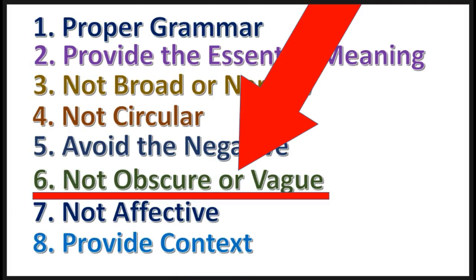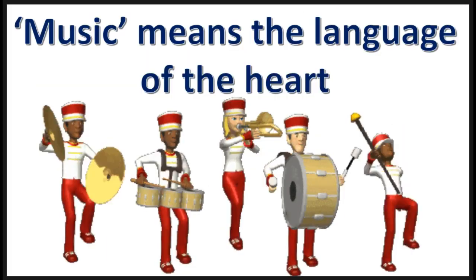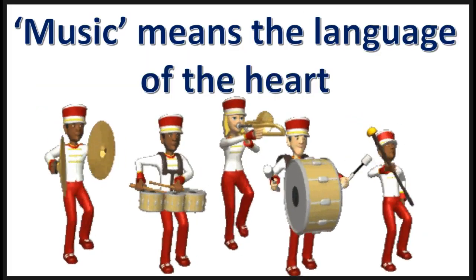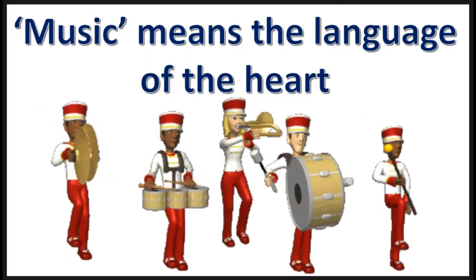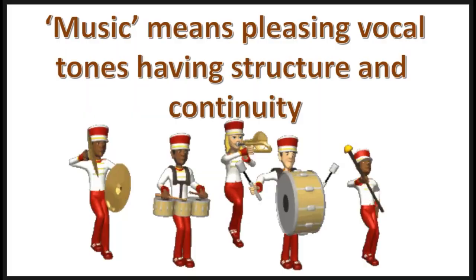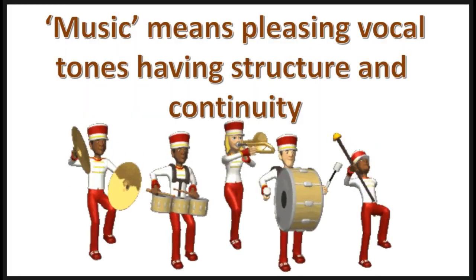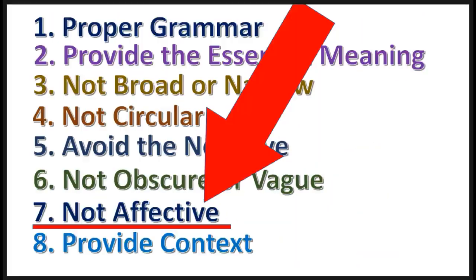Rule number six: a lexical definition should not be obscure or vague. Here's an example of an obscure or vague definition. It should be this way — this definition is better.